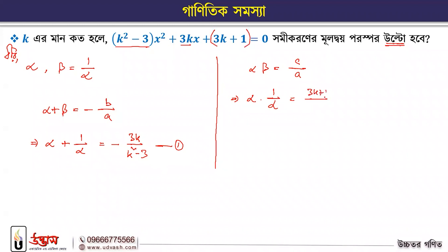Alpha is on one side and 1/alpha is on the other side. c is a constant part — it is 3k plus 1. So c is 3k plus 1. And this gives us k² minus 3 on one side. So alpha times 1/alpha equals c/a = 3k plus 1.